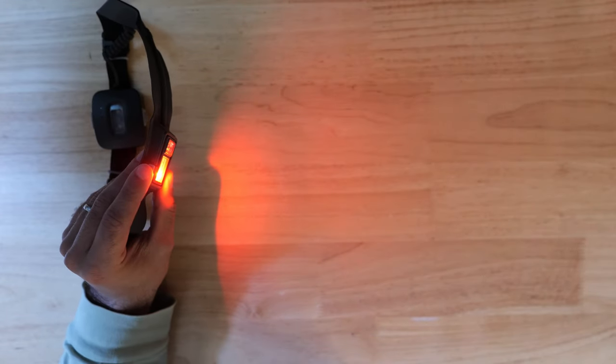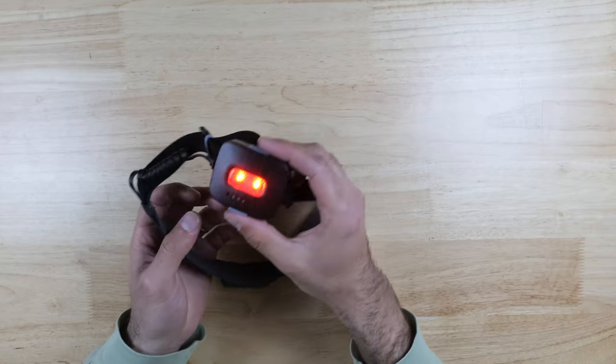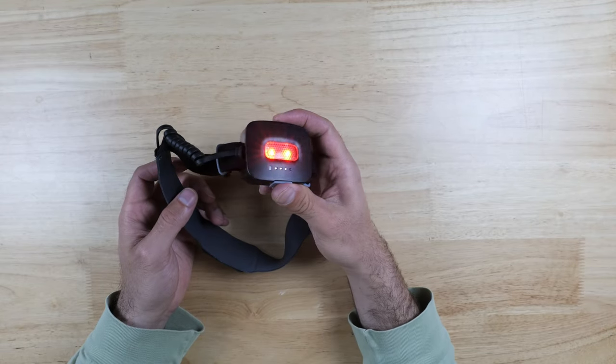There's also a red mode which is useful for keeping a low profile and preserving your night vision and also a strobe mode for the times when you really want to be seen. The back has a solid red mode and a flashing red mode and this is good for running at night.